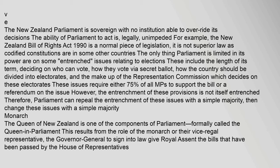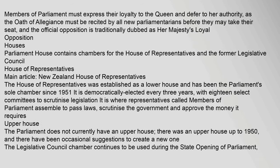Monarch: The Queen of New Zealand is one of the components of Parliament, formally called the Queen in Parliament. This results from the role of the monarch or their vice-regal representative, the Governor-General, to sign into law — give royal assent — the bills that have been passed by the House of Representatives. Members of Parliament must express their loyalty to the Queen and defer to her authority, as the Oath of Allegiance must be recited by all new parliamentarians before they may take their seat, and the official opposition is traditionally dubbed as Her Majesty's Loyal Opposition.